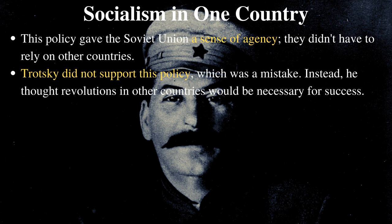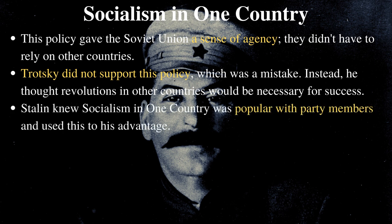Trotsky, who was one of Stalin's main opponents in the leadership race, did not support socialism in one country. He was on the far left of the Bolshevik party and believed that in order for socialism to work, other countries would have to go through revolutions as well. This wasn't a very appealing idea for the Bolsheviks because it removes their independence and makes the party reliant on other countries. Stalin knew this and used it to his advantage, and it's not the only time he was able to sense the direction of the tide and adjust his position accordingly.